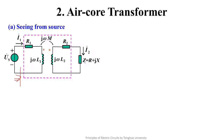Now let's write the equations and analyze the mutual inductance circuit using knowledge from previous lectures. We can apply KVL to the primary side. We define Z11 as the sum of all the impedance of the primary side, and Z22 as the sum of all the impedance of the secondary side, which includes the secondary coil and the load.